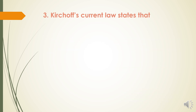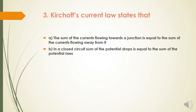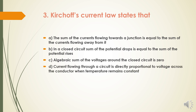Next question: Kirchhoff's current law states that — option A: the sum of the current flowing towards a junction is equal to the sum of the current flowing away from it; option B: in a closed circuit, sum of potential drop is equal to sum of potential rise; option C: algebraic sum of the voltages around the closed circuit is 0; option D: current flowing through a circuit is directly proportional to voltage when temperature remains constant. Option D is Ohm's law; options B and C are KVL. Therefore, the first option is Kirchhoff's current law, and the answer is option A.